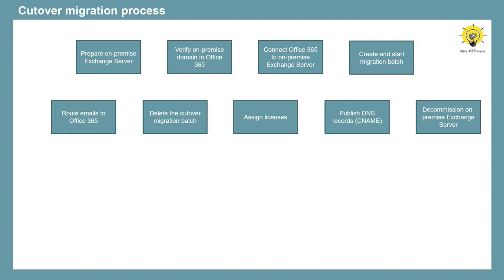Let's take a look at the cutover migration process. First, we need to meet all the prerequisites for cutover migration. Once we have met all the prerequisites, we need to create an Office 365 tenant, and we need to verify the on-premise domain in Office 365. Then we will create a migration endpoint to connect Office 365 to our on-premise Exchange Server. Once the migration endpoint is created, we will create a migration batch and start the migration. Once migration is completed, we will create an MX record in public DNS, and we will route all the emails directly to Office 365.